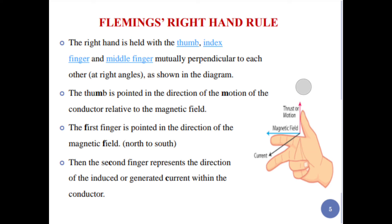The thumb shows the direction of motion of the conductor. The first finger is pointed in the direction of the magnetic field, from north to south. The second finger (middle finger) represents the direction of the induced or generated current within the conductor.